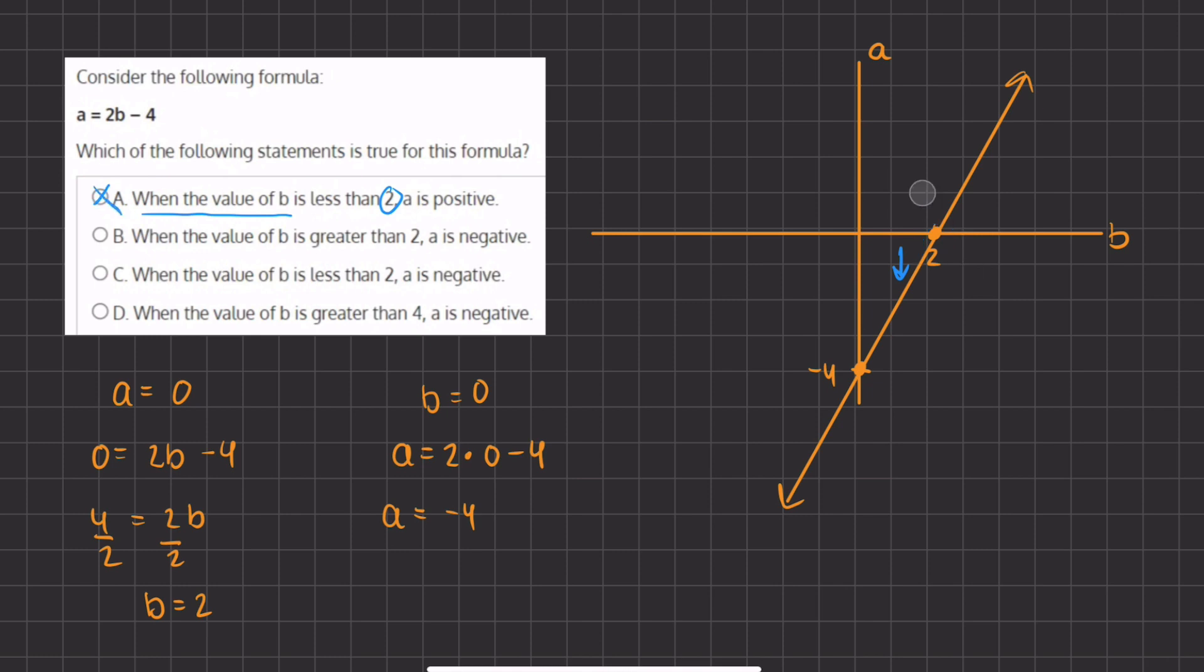And now we can move on to b. b states, when the value of b is greater than 2, so 2 is here and greater than 2 is in this direction, then a is negative. Well, we see that all the a values are positive once we cross to the right-hand side, and therefore b is also incorrect.